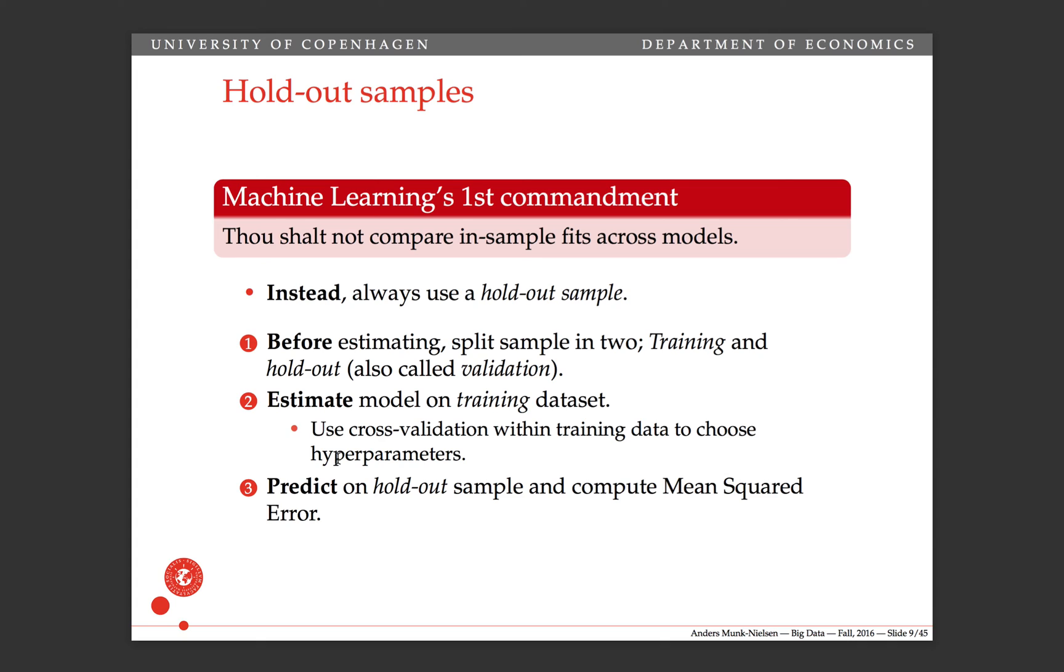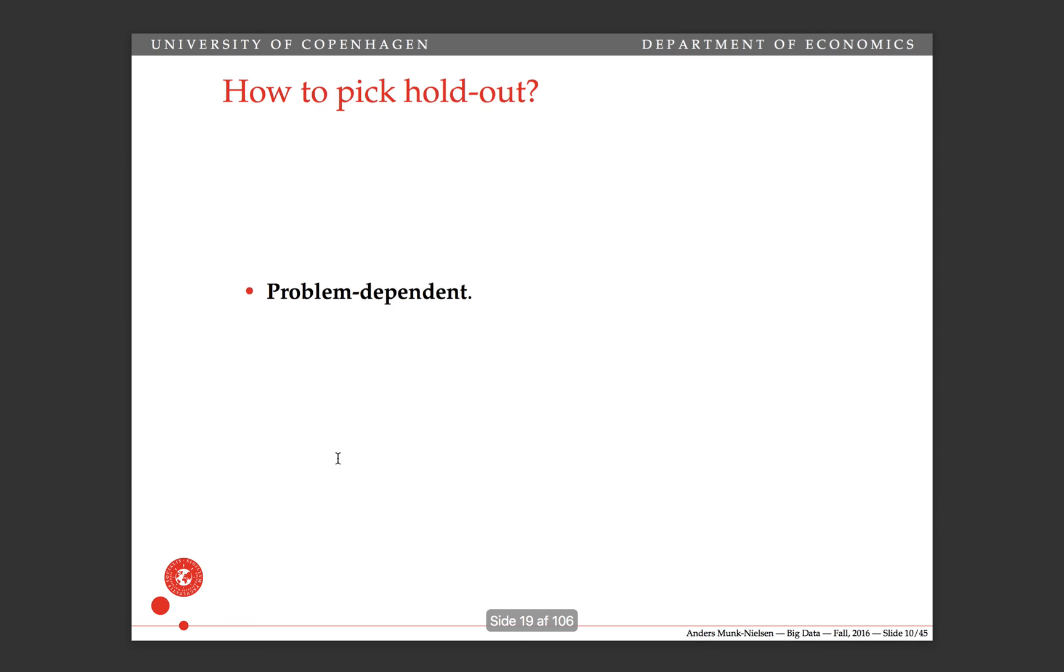That way, you're comparing the fit, not on the same data set that you actually fitted your model or estimated your model with. I think the reason why this hasn't really been done much in econometrics back in the day or historically is that we just haven't had enough data to do this. Our data sets have been so small that we really needed all of the observations in order to estimate our parameters precisely. But really, you want to use holdout samples when you're comparing fits of the models.